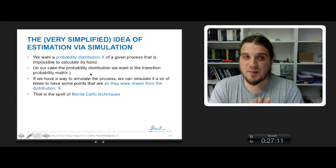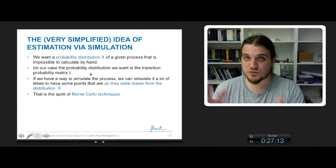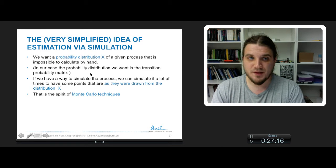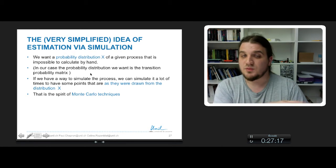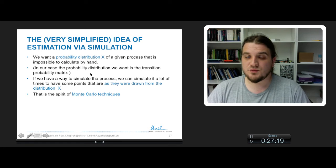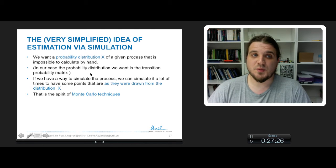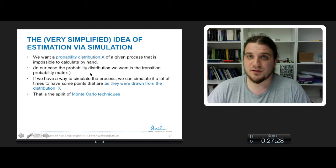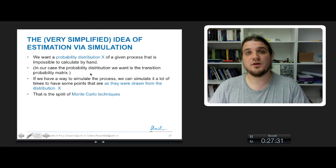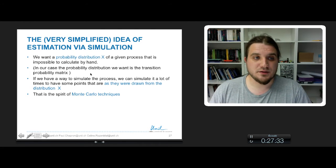Let's say we want a probability distribution X, so the probability transition matrix for example, of a given process, our process of network evolution, and we are not able to calculate by hand. So in our case, what we want for example is the probability distribution for transition from a network to another configuration.